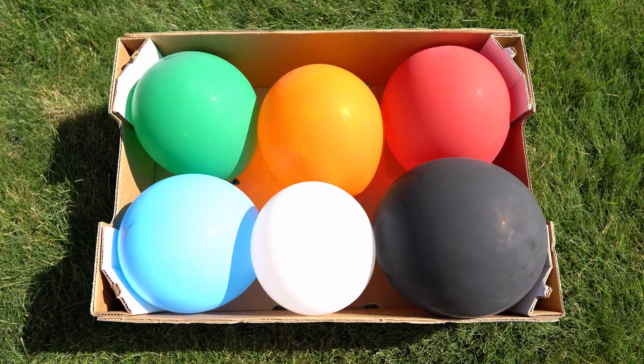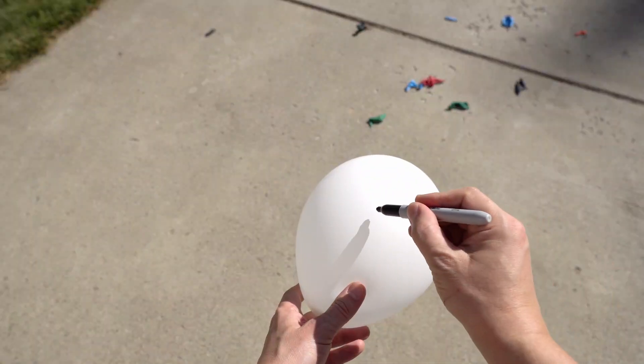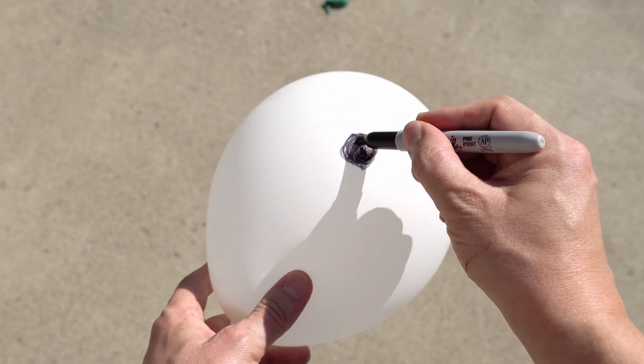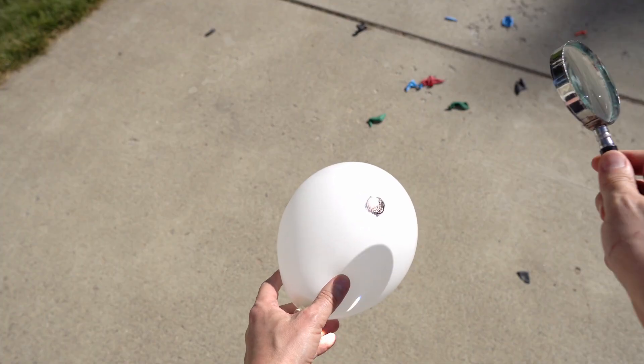Basically, the lighter the color balloon, the harder to pop it. Let's see what happens if I draw a black spot on this balloon here and then I try to pop it with the magnifying glass. Let's check it out.